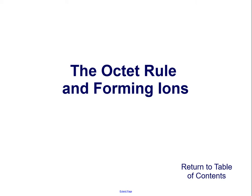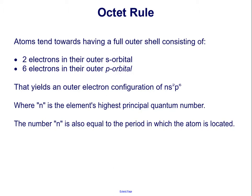The Octet Rule and Forming Ions. Atoms tend toward having a full outer shell consisting of two electrons in their outer s orbital and six electrons in their outer p orbital. That yields an outer electron configuration of ns²p⁶, where n is the element's highest principal quantum number. The number n is also equal to the period in which the atom is located.